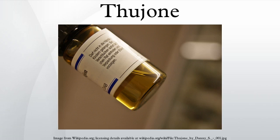Thujone is a ketone and a monoterpene that occurs naturally in two diastereomeric forms: (+)-thujone and (-)-thujone. It has a menthol odor. Even though it is best known as a chemical compound in the spirit absinthe, recent studies reveal that absinthe contains only small quantities of thujone, and therefore it is unlikely that thujone is responsible for absinthe's alleged psychedelic effects.